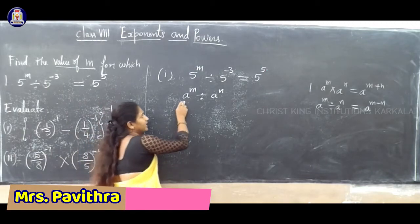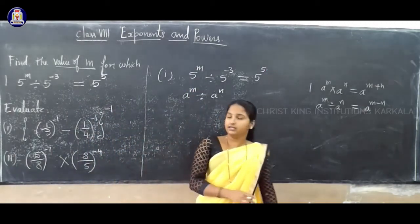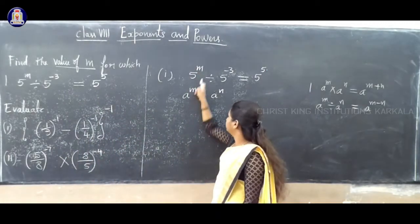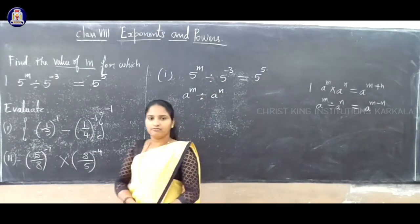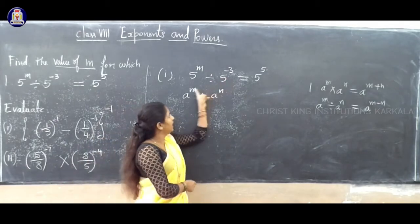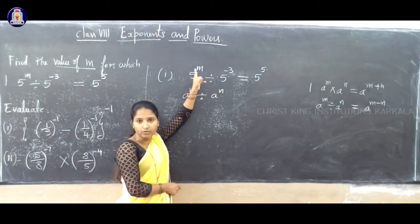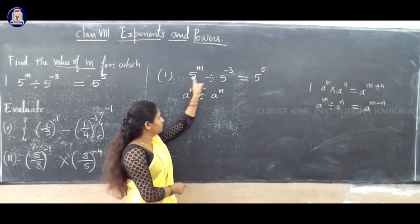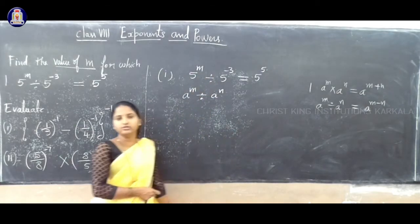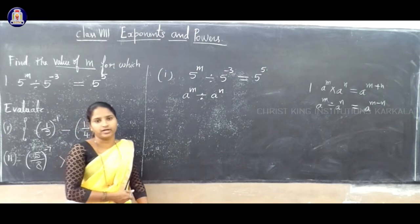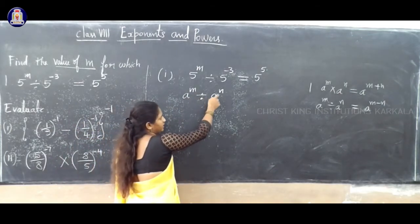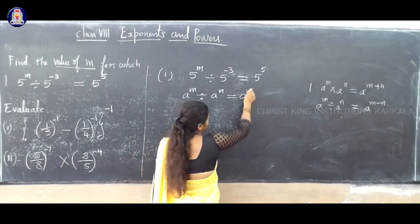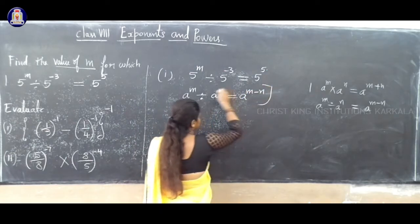Now, what is A? A is 5 and the first power is n. What is the second power? The second power is minus 3. So in place of the second variable, the value is minus 3, and n we don't know — that is what we are about to find out. Base is same: 5 and 5. So we can use the second law of exponent. The second law says A power m divided by A power n is equal to A power m minus n. This is our second law.